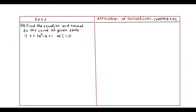Find the equation of tangent and the equation of normal to the curve at the given points. Tangent and normal — okay?